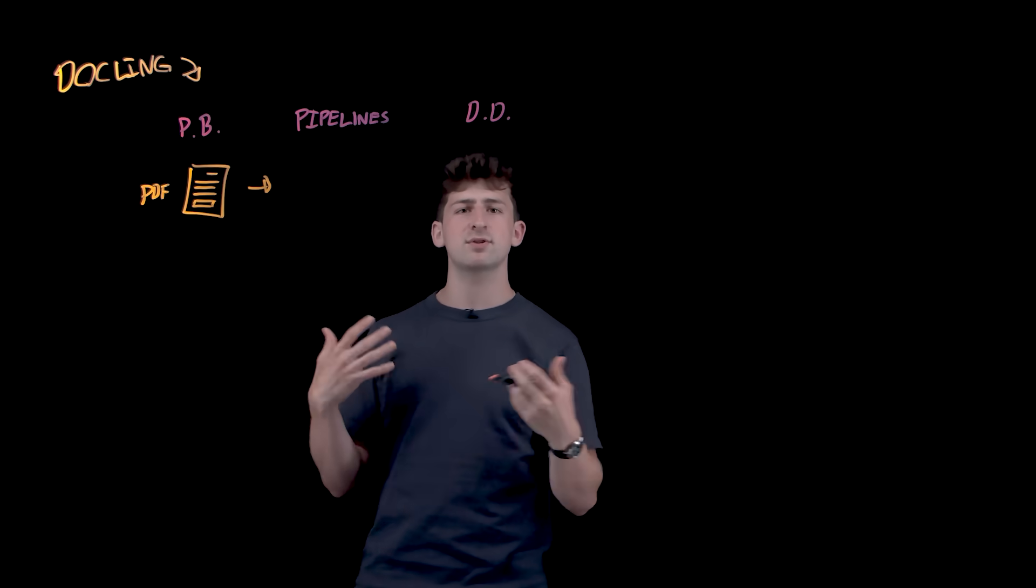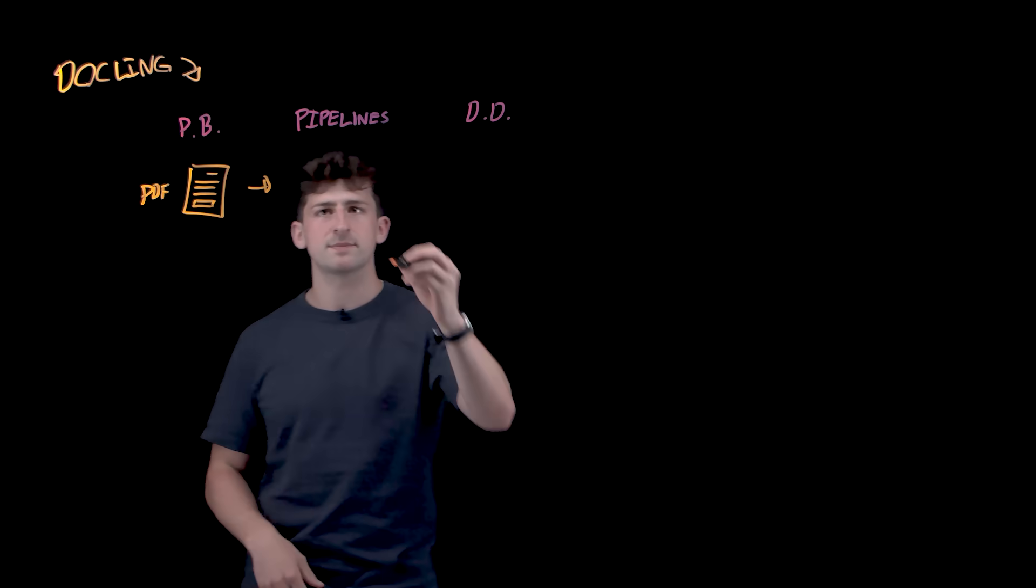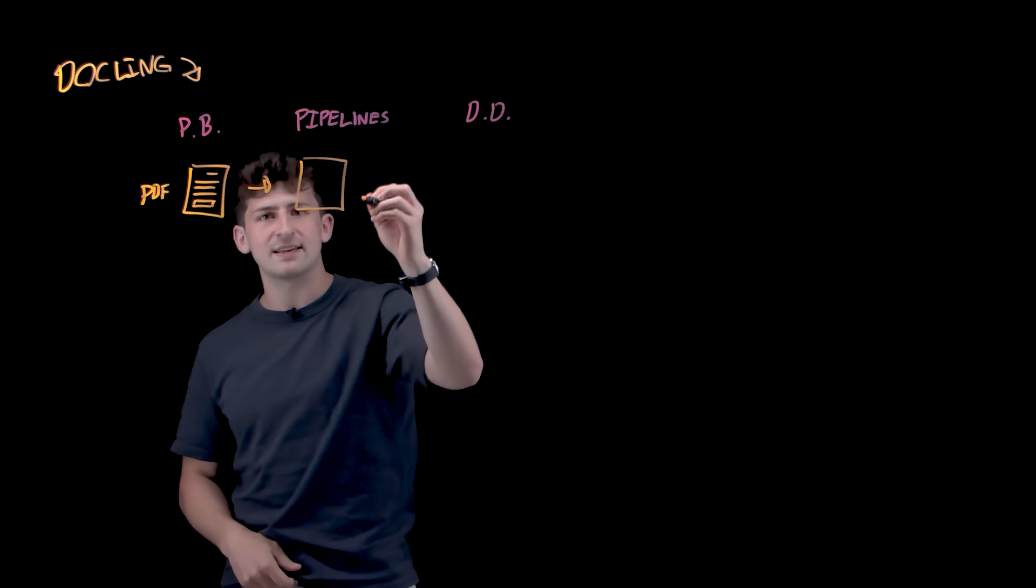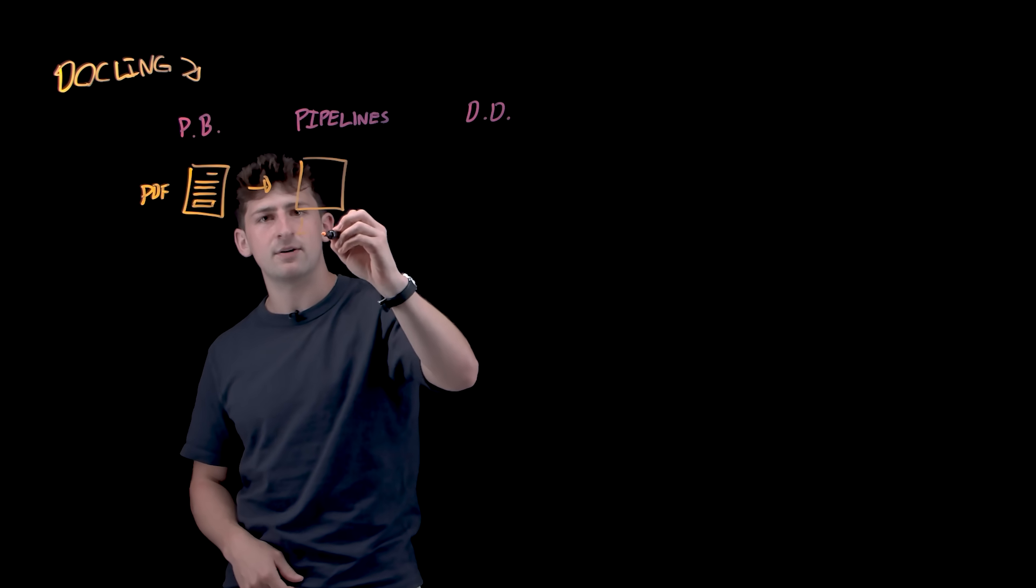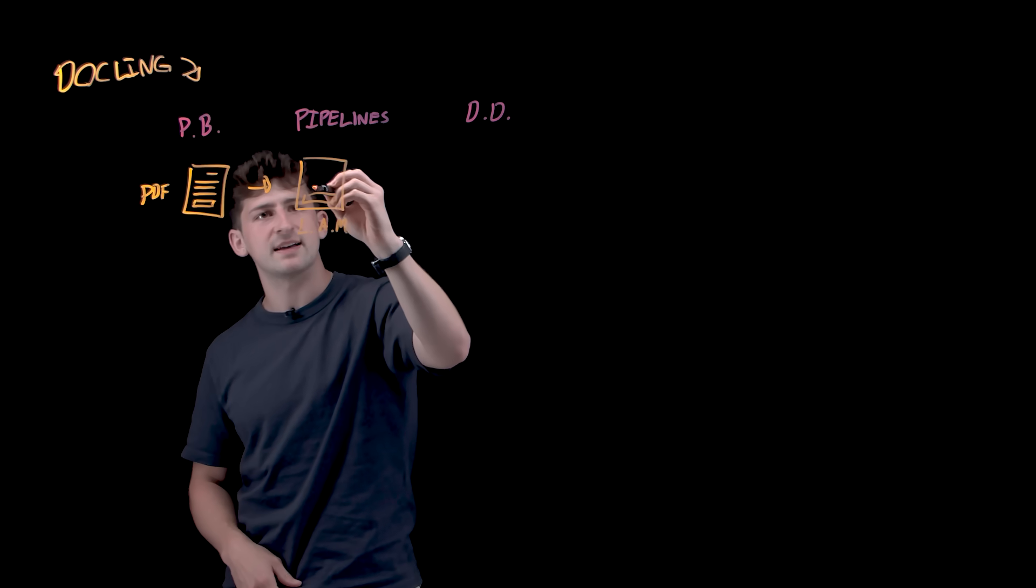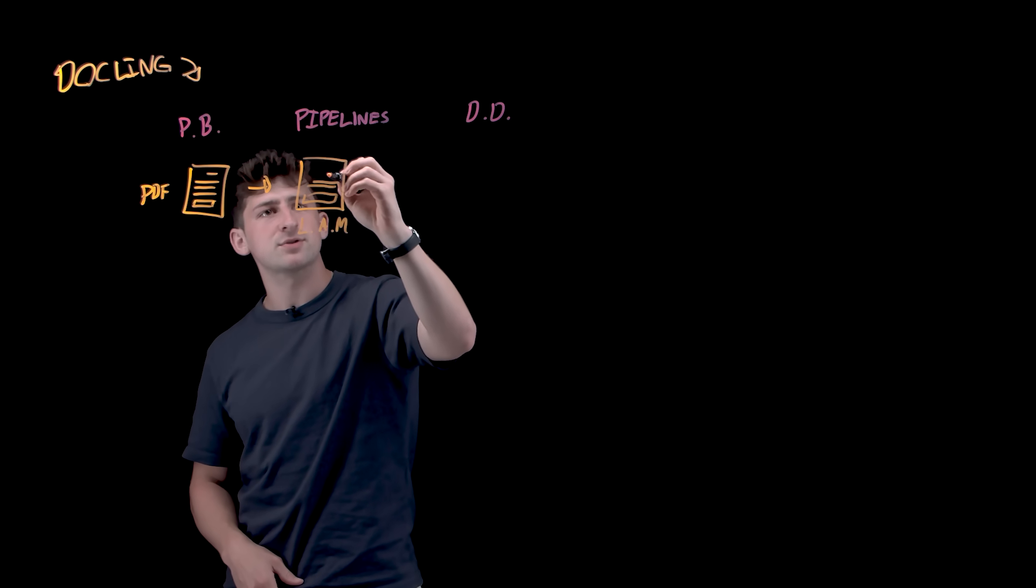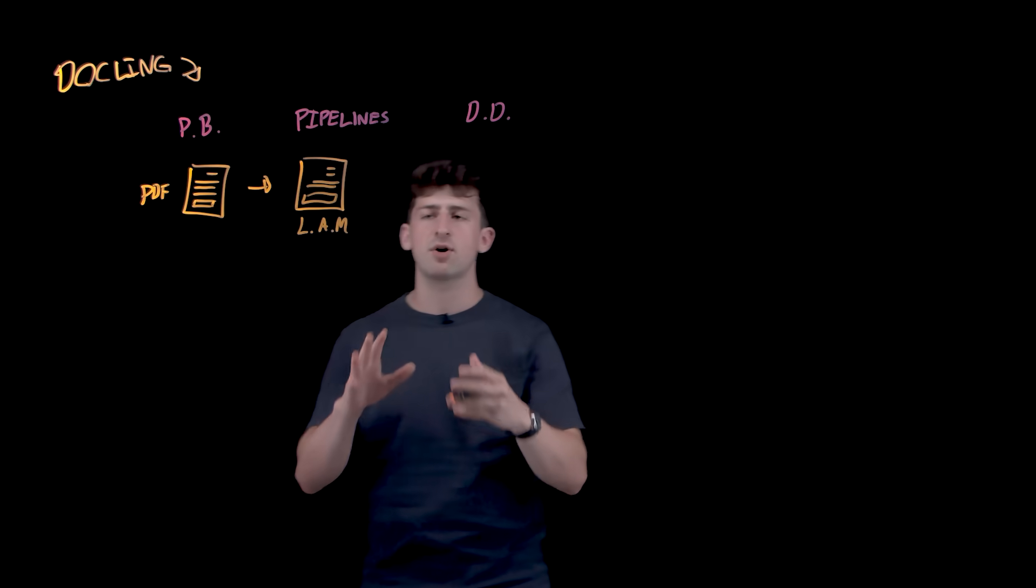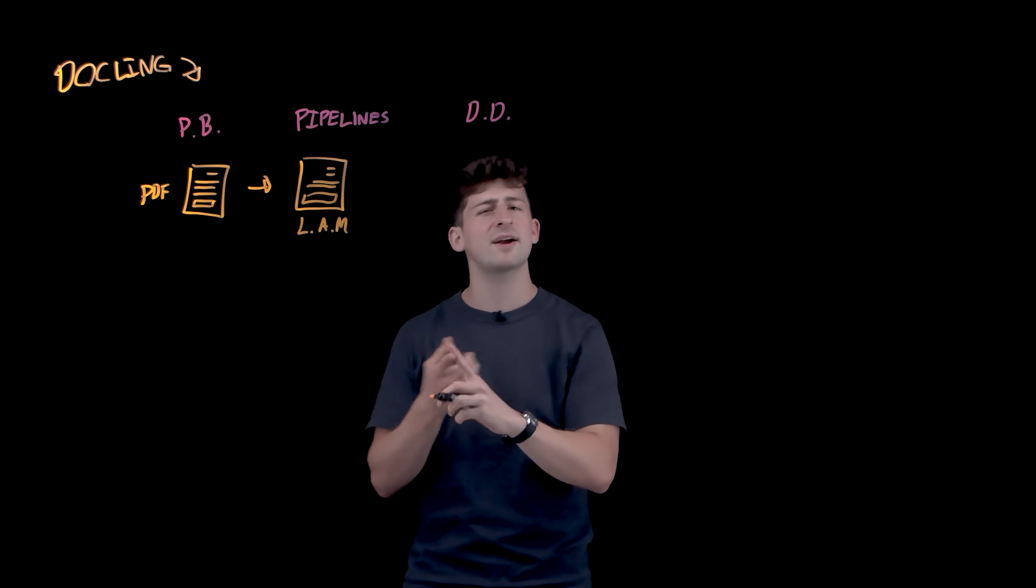we run through the pipeline in order to do high-quality reconstruction. So the first step is what's known as the Layout Analysis Model. So what this does is it essentially goes through and predicts bounding boxes for all of the different page elements like paragraphs,